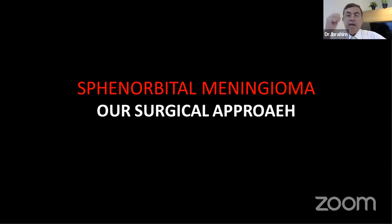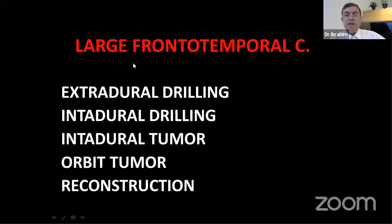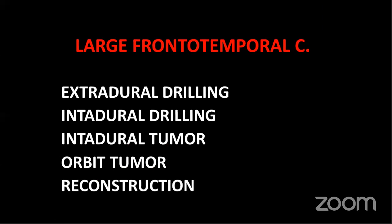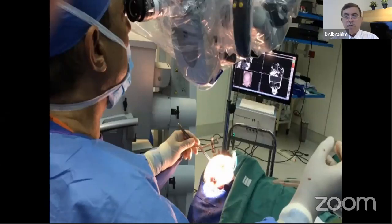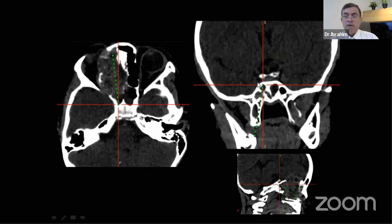Given the extensive involvement seen in my cases, you must be open-minded about differential diagnosis. For our surgical approach, I favor a large frontotemporal craniotomy — either standard or a variation of the pterional approach, particularly the Dolenc approach with its variations. You start with extradural drilling, drill the bone, then perform intradural drilling if necessary, enter the intradural tumor and the orbital tumor, then reconstruct. I use navigation to know exactly where we are — for example, at the superior orbital fissure.